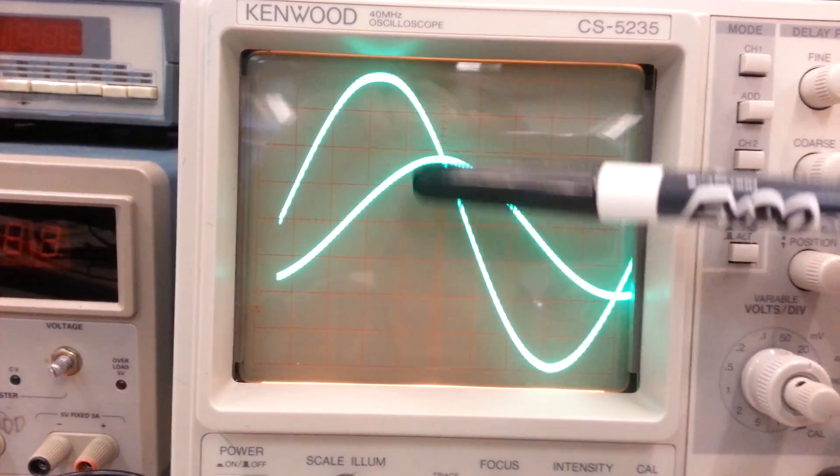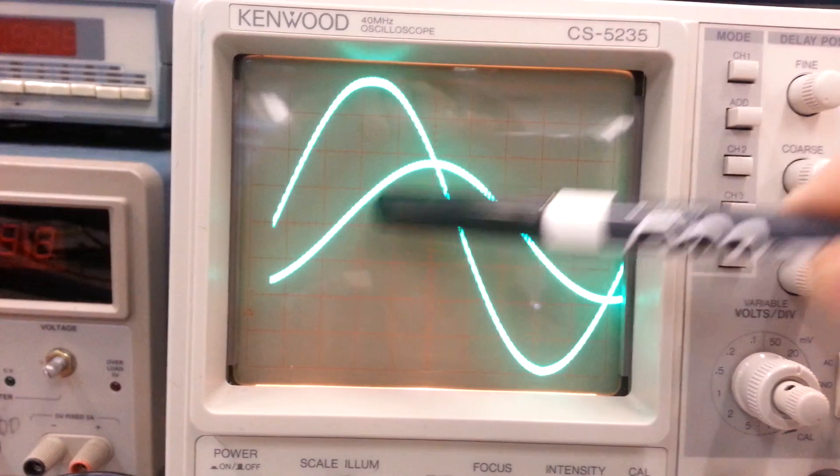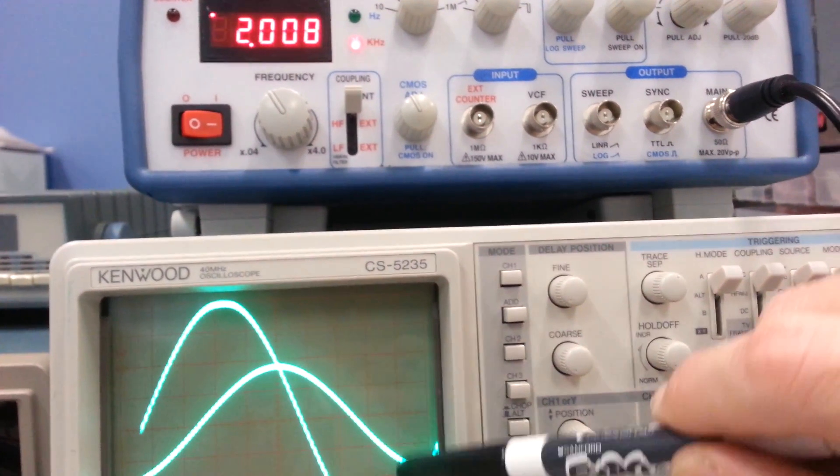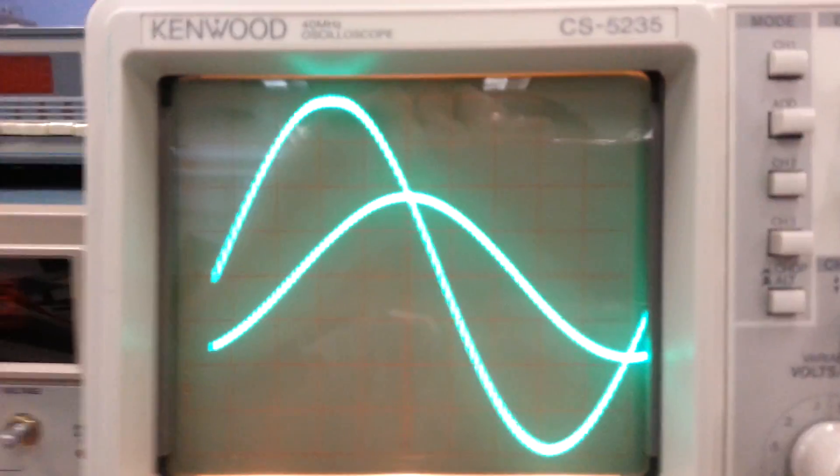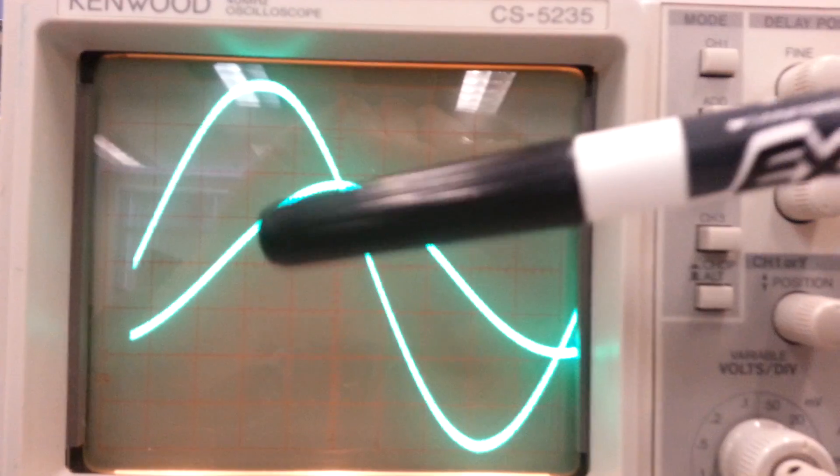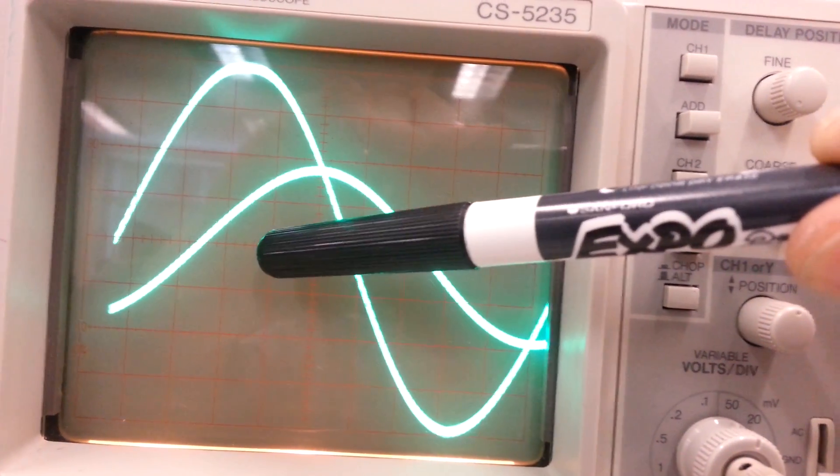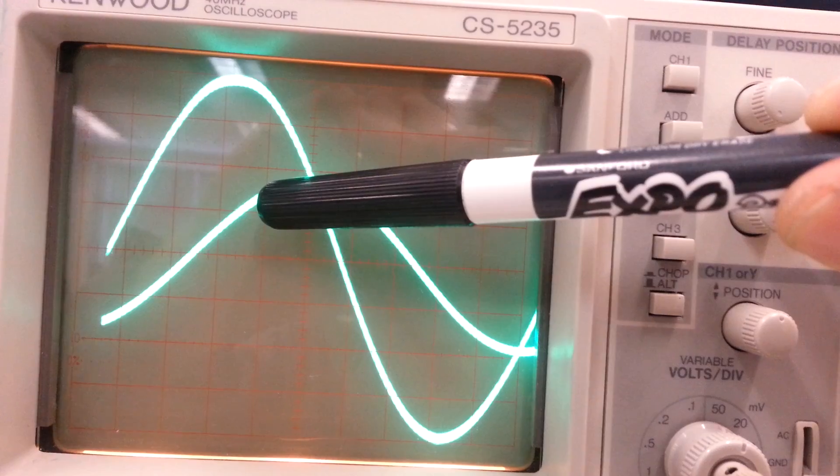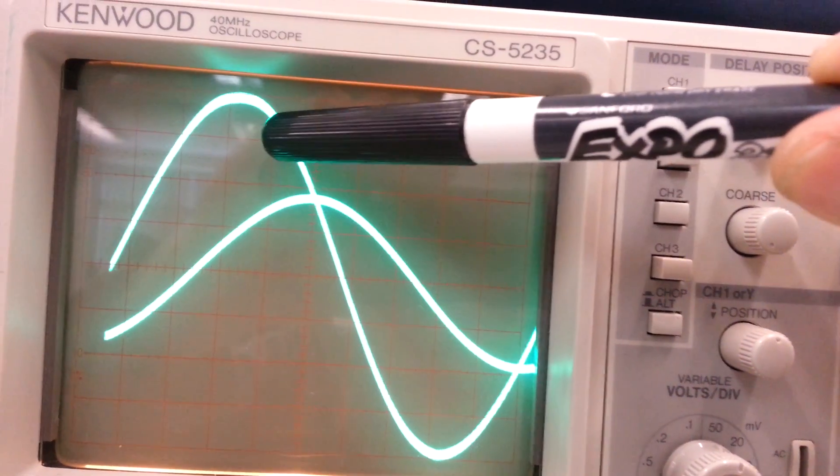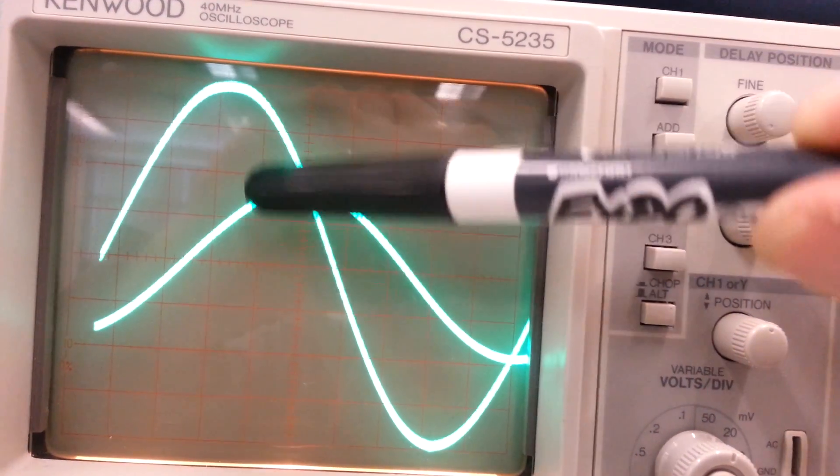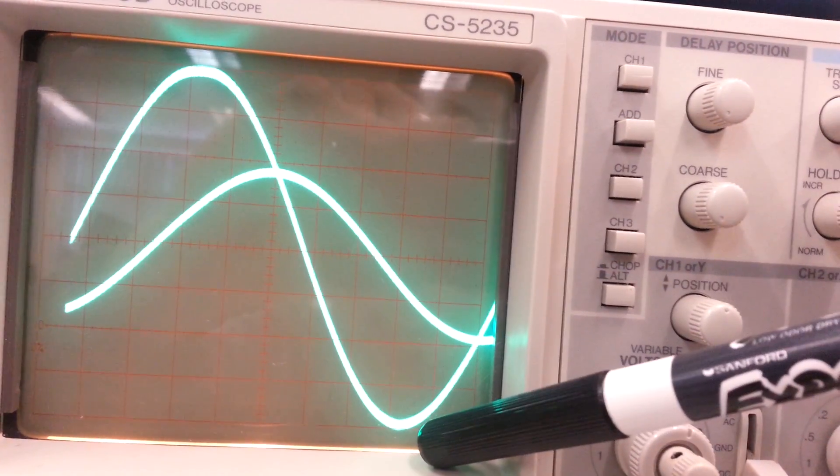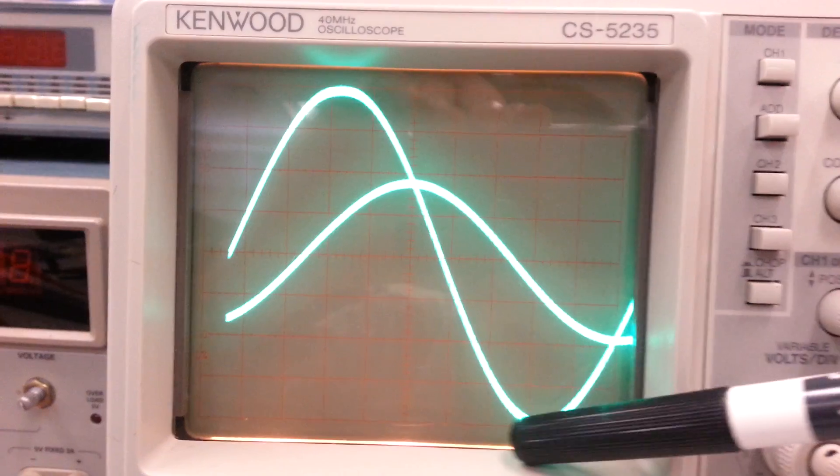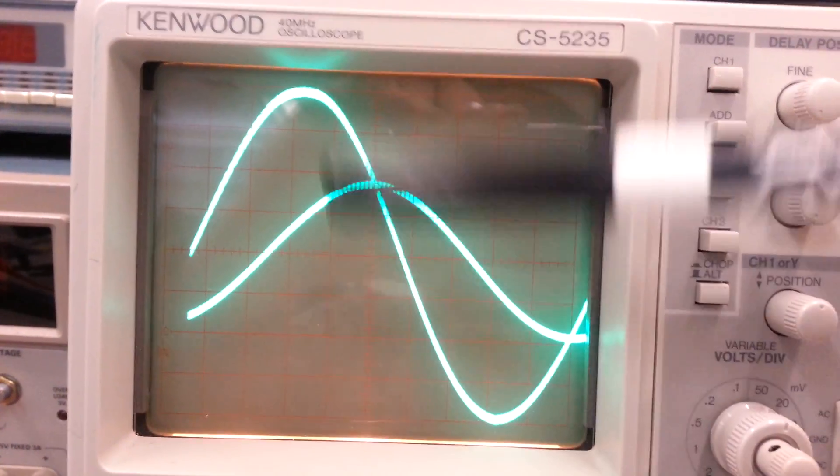Channel 1, channel 2. The source from the function generator, channel 1, voltage across the capacitor, channel 2. The source of the generator is from a ground, a half a volt, one volt, one and a half, two volts peak, negative two volts on the negative peak, or four volts peak to peak.